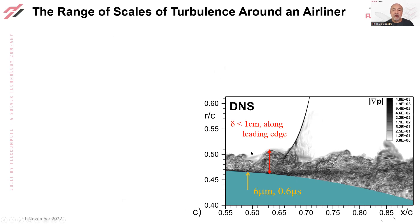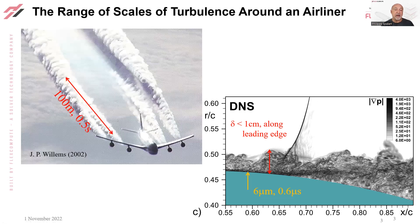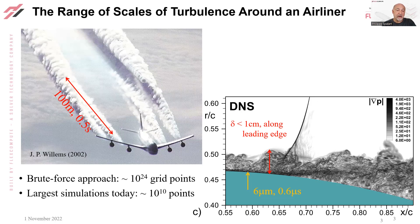Let's look at length scales. The boundary layer thickness is well under a centimeter at the leading edge, and the structures near the wall are on the order of a few micrometers, and the time scale is a few microseconds. We need to predict the lift and drag of the entire airplane, so the scale there is of the order of 100 meters. The ratio of scales is huge. A brute force gridding approach would require 10 to the 24th power grid points, and the best we can do today is around 10 to the 10th. It may be that we never can build a computer large enough to do this — GPU or not, quantum computing or not. So we're going to have to do some modeling.